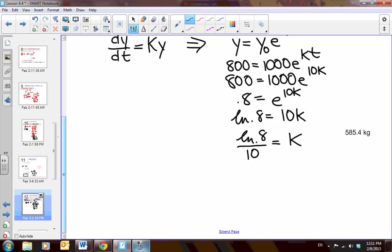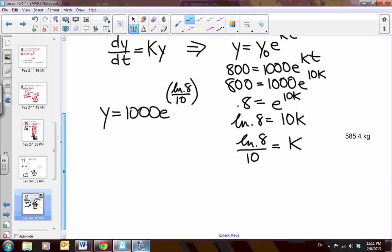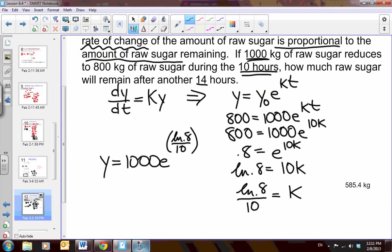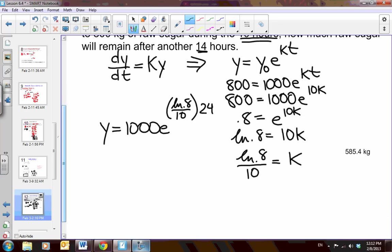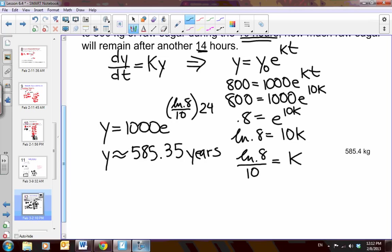So, we go and put that back into the original problem. y equals the initial amount is 1,000 E, and the k is natural log of 0.8 over 10, and what is the time I'm looking for? It says after another 14 hours. Well, I had 10 hours, so that means 24 hours, and lo and behold, I just put this in my calculator, and the time is approximately 585.35 years. Now make sure you come to class tomorrow with these examples written down clearly and thoroughly notes. See you then.